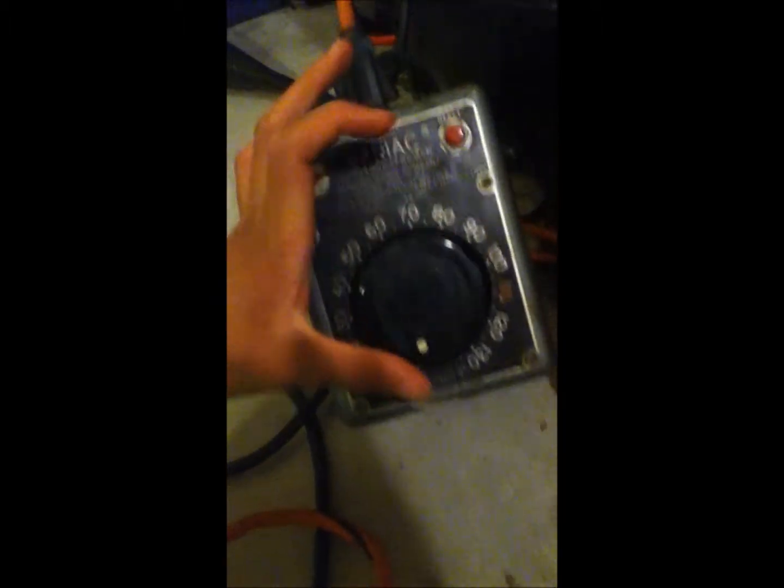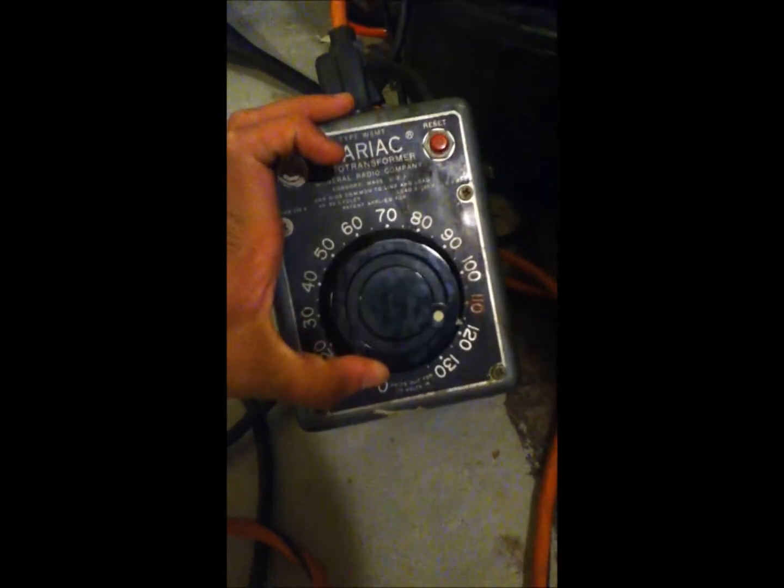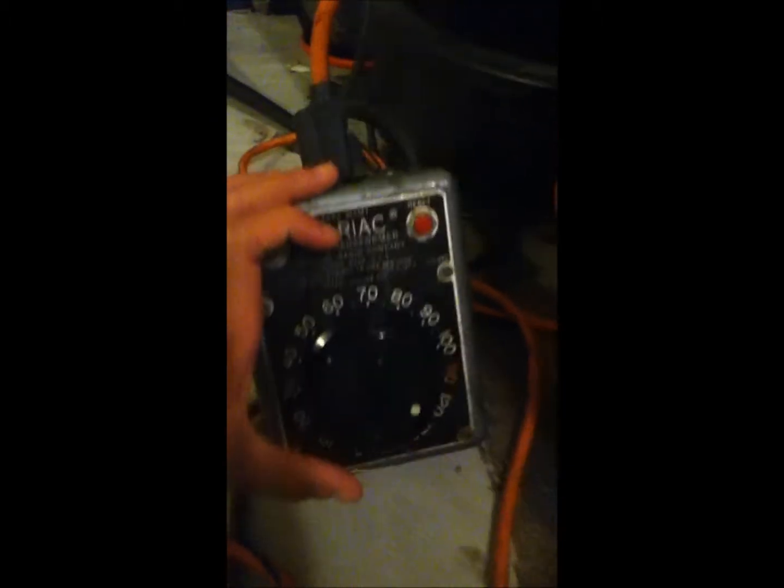Now, I'm just going to turn on this variac here, slowly to 120 volts, and I have generated a plasma here.